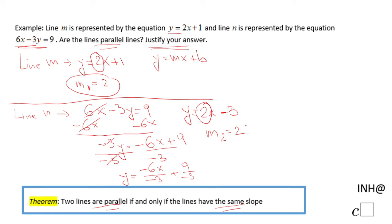Yes, these two lines are parallel lines because they have the same slope. That is the justification. At this moment we know they are parallel lines.